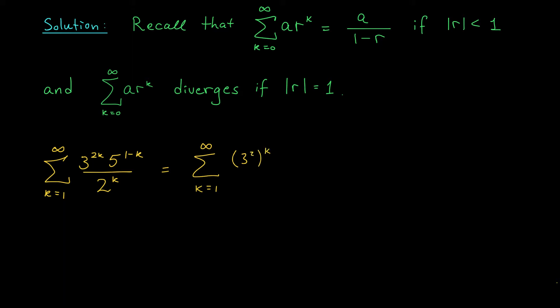break this up as 3 squared to the k. Similarly, for the 5 term, I'll break that up as 5 to the 1 times 5 to the minus k. Okay, starting to look a little bit more like a geometric series. Finally, I'll leave that 2 to the k term alone. It looks fine as is.